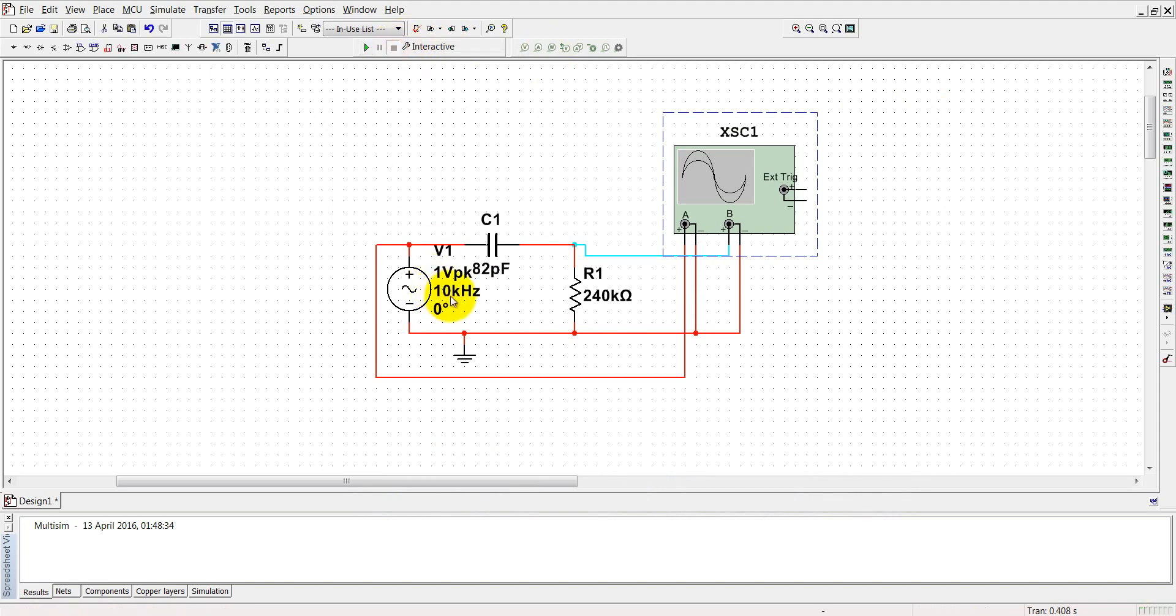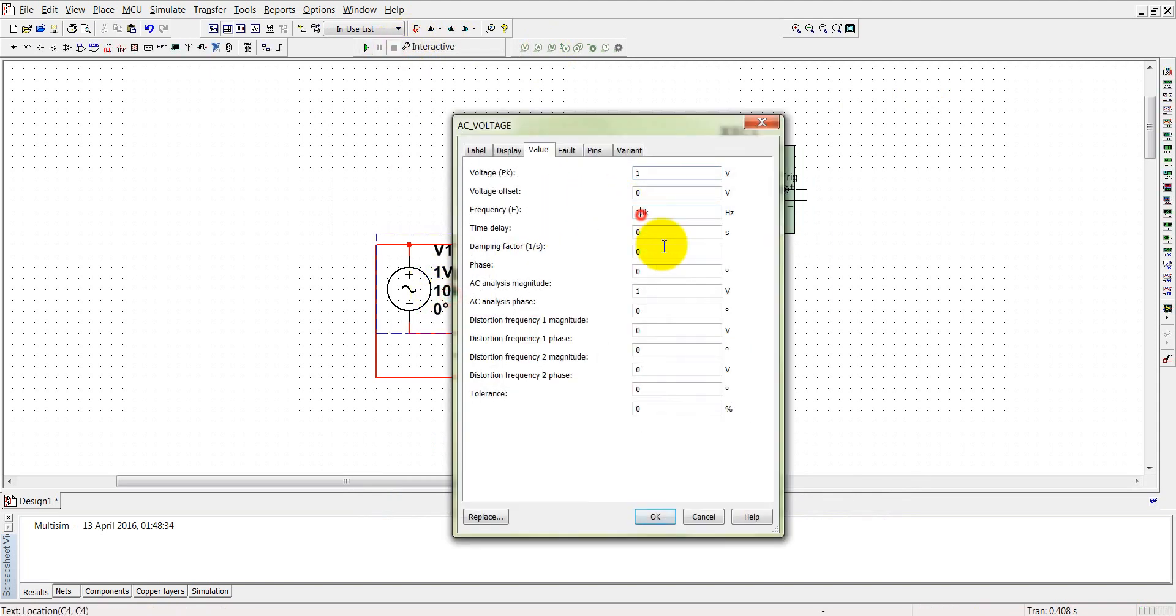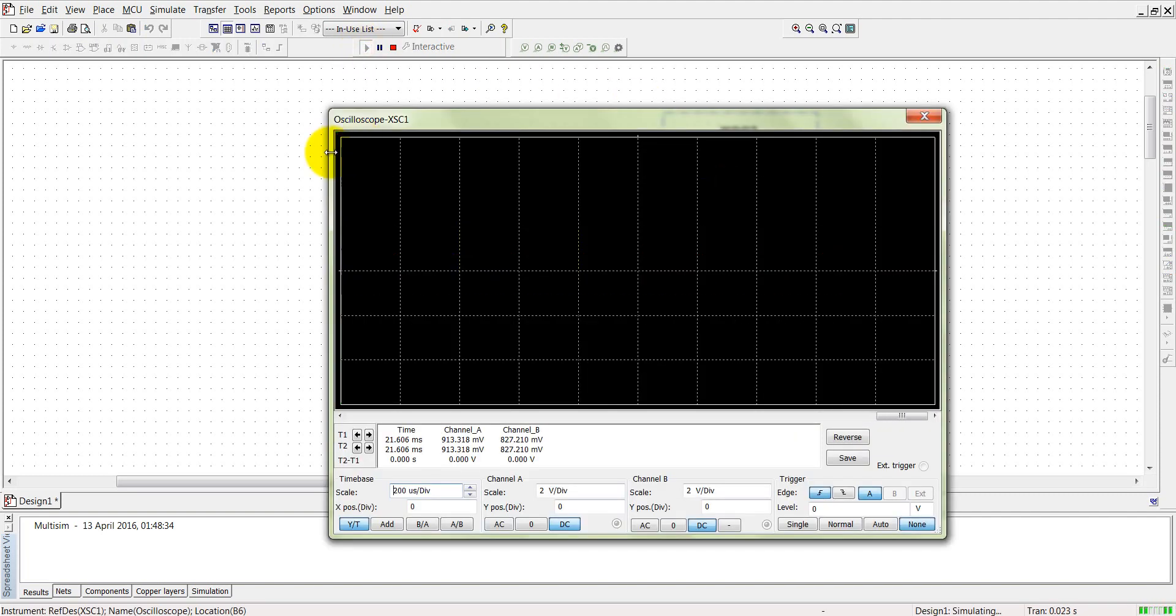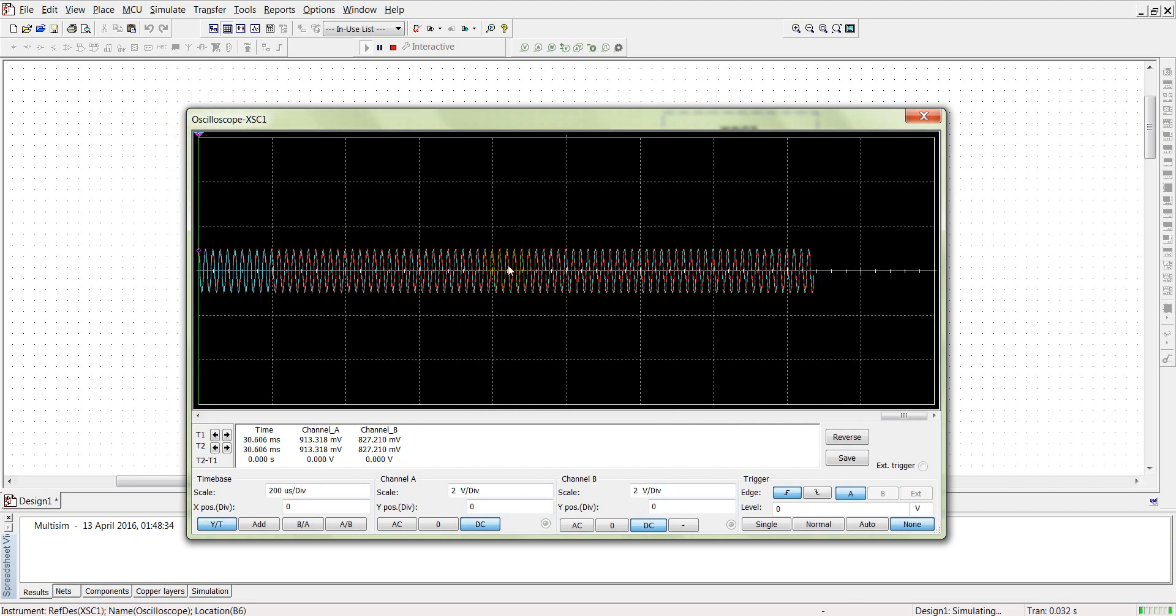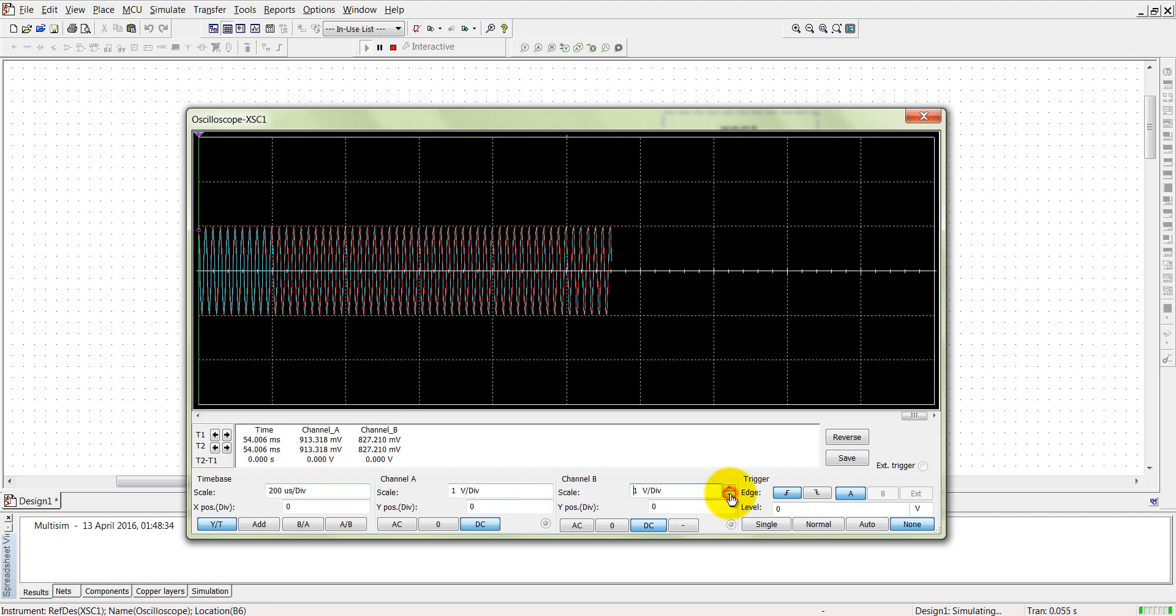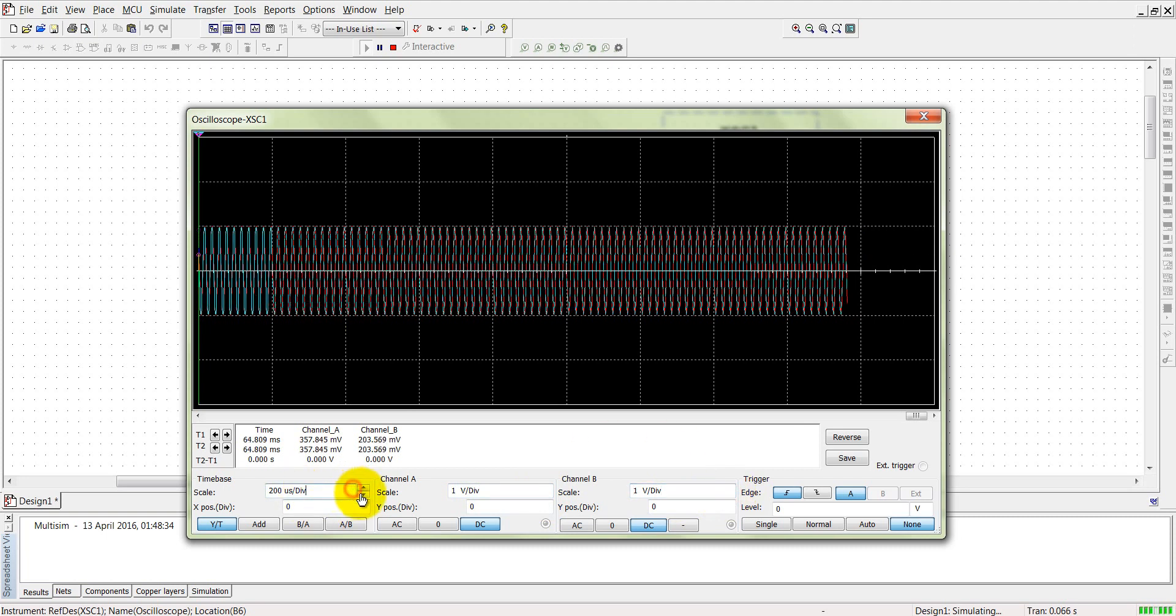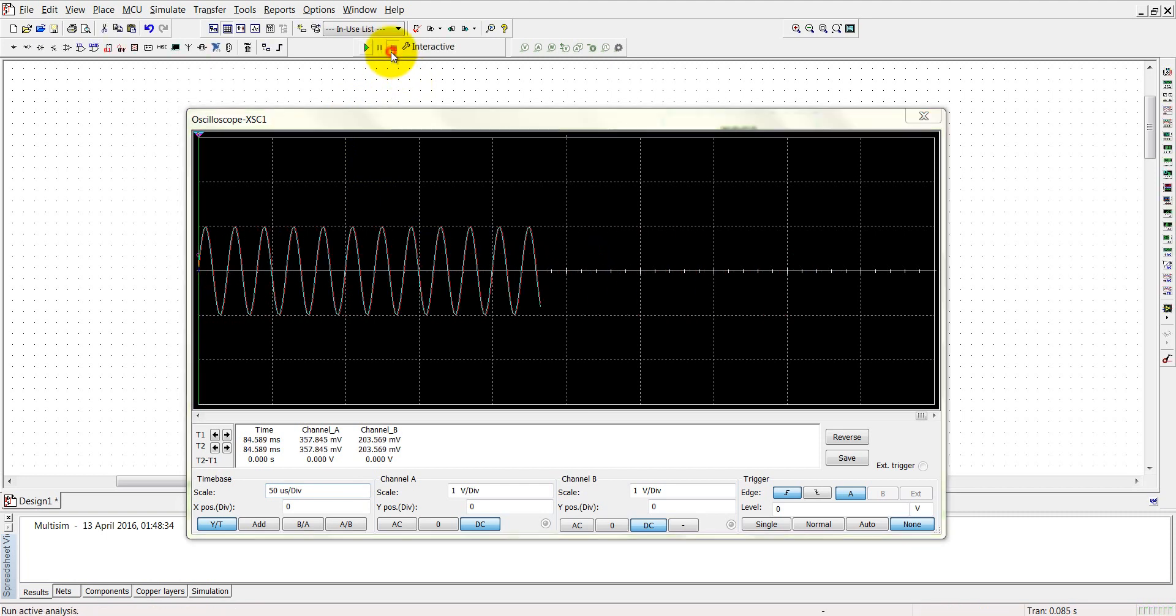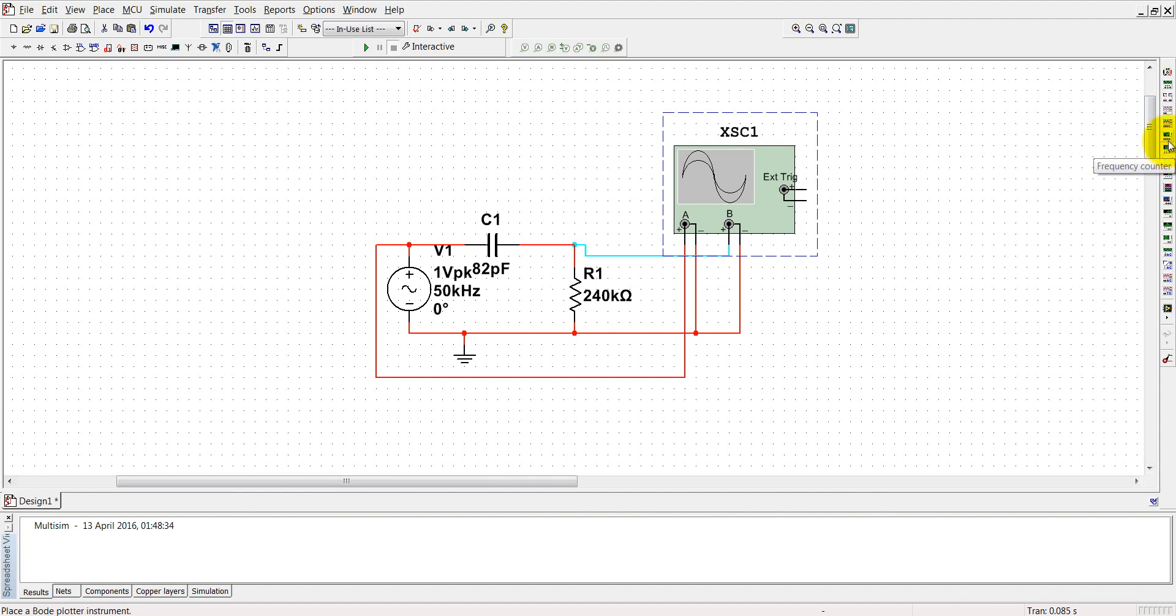And if we increase more, let's make it 50 kilohertz. Now see, input and output is matching together here. Just decrease the scaling. See, output and input is matching together.